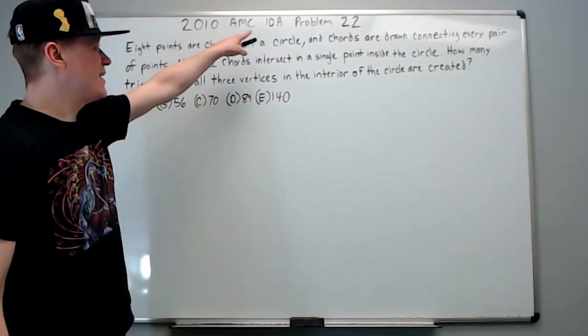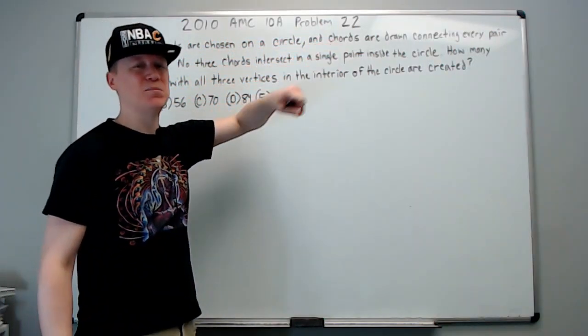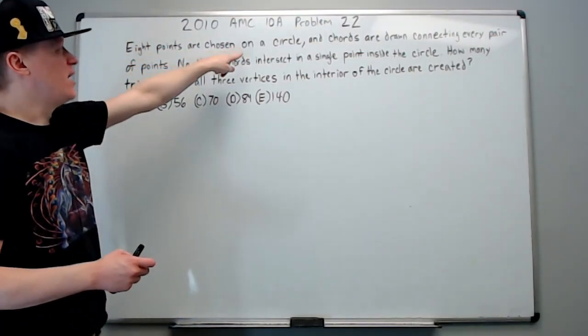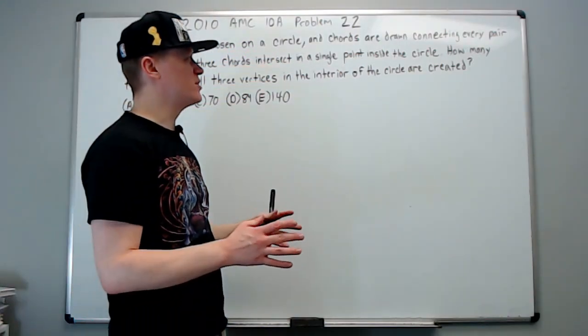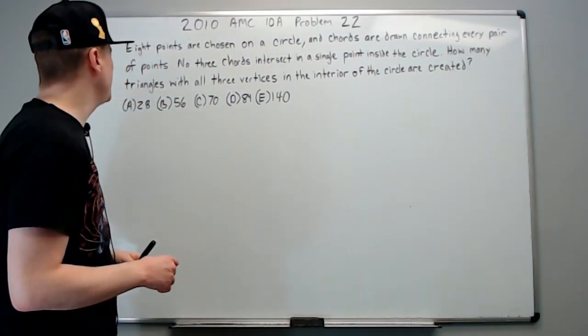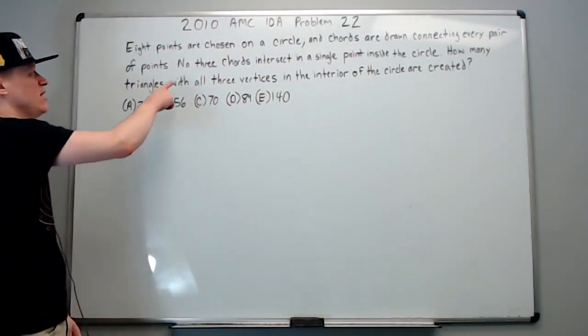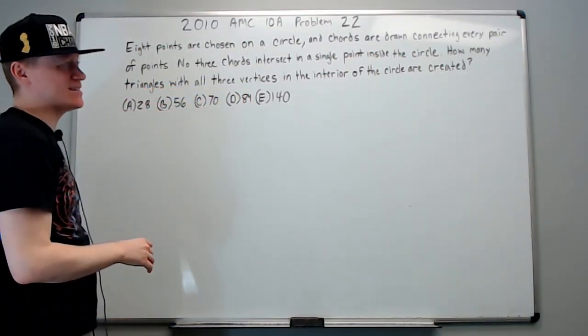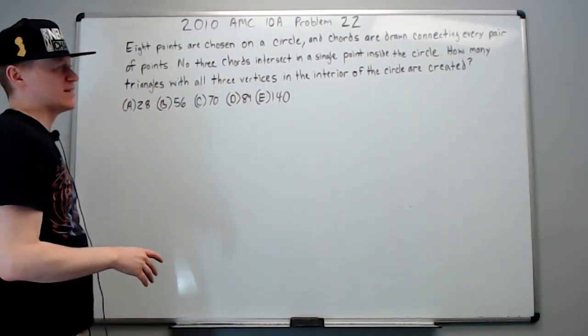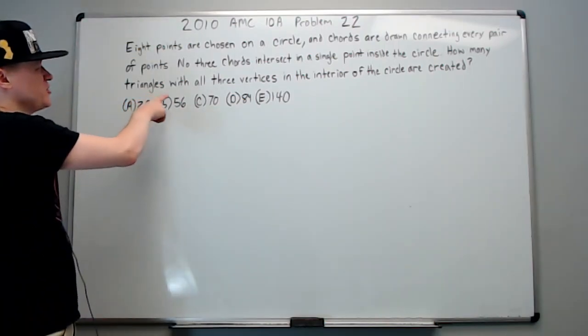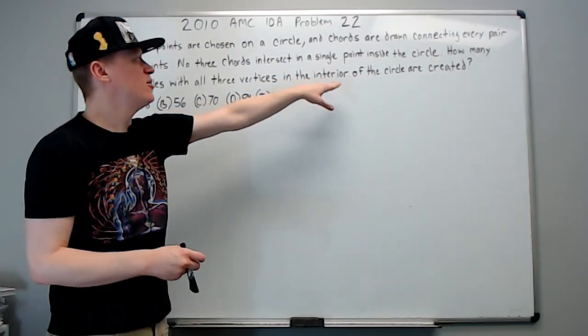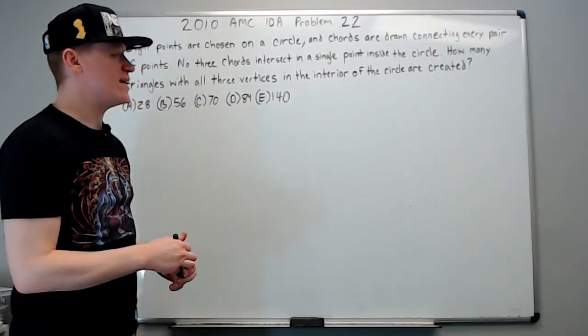This is the 2010 AMC 10A problem number 22. Eight points are chosen on a circle, and chords are drawn connecting every pair of points. No three chords intersect in a single point inside the circle. That'll be important later. How many triangles with all three vertices in the interior of the circle are created?